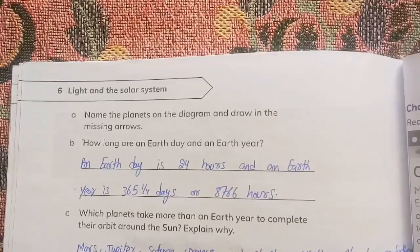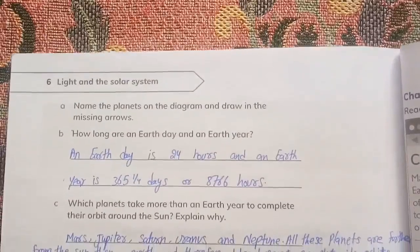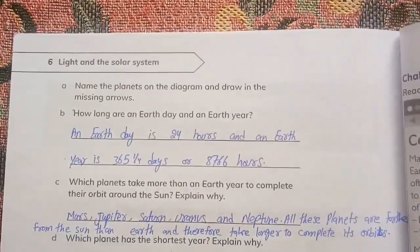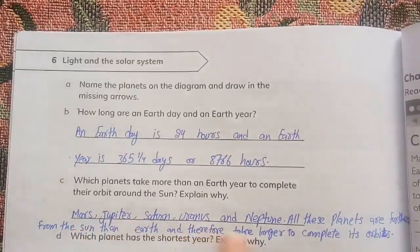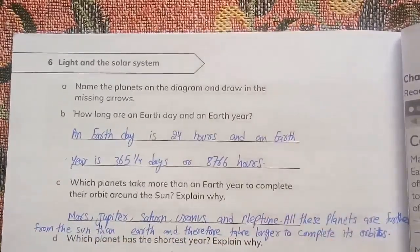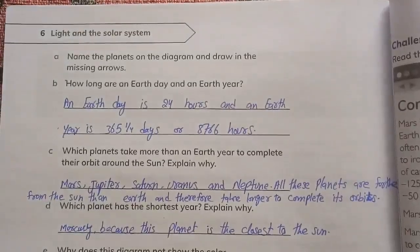Part number C: Which planets take more than an Earth year to complete their orbit around the Sun? Explain why. Mars, Jupiter, Saturn, Uranus, and Neptune. All these planets are farther from the Sun than Earth, therefore take longer to complete their orbit. Which planet has the shortest year? Explain why. Mercury, because this planet is the closest to the Sun.